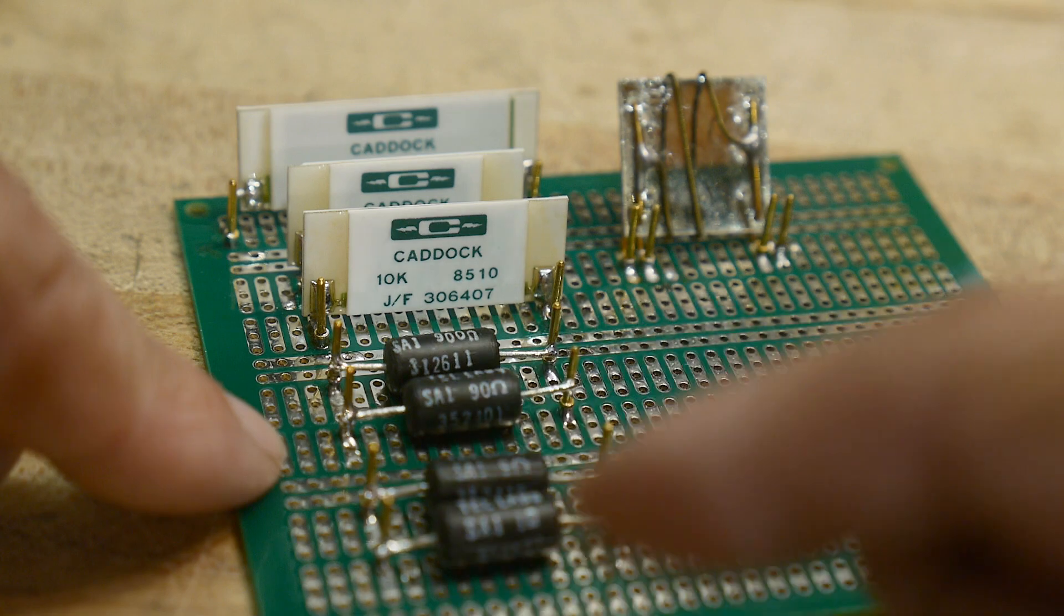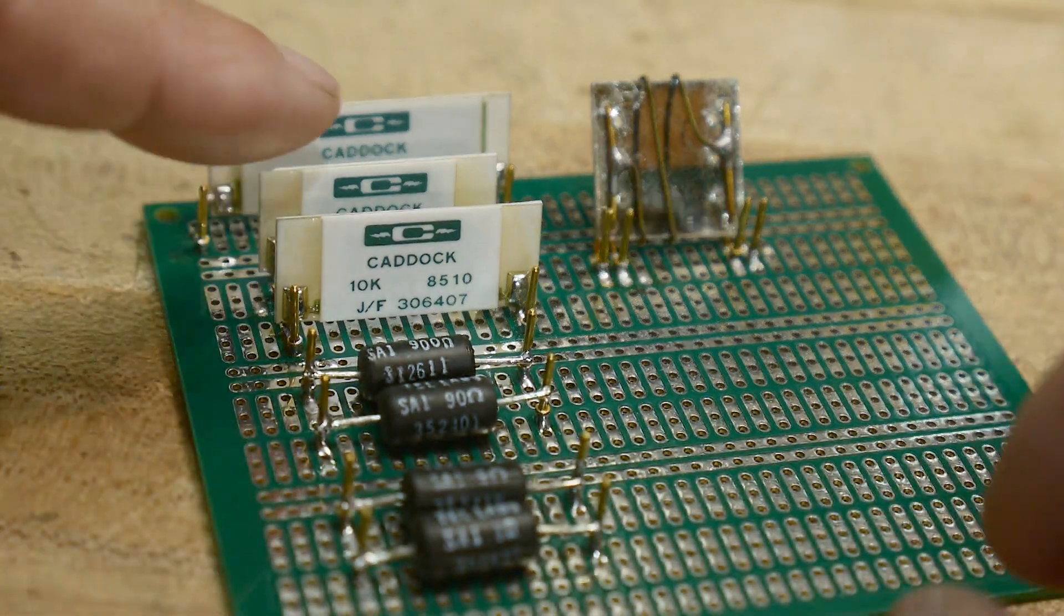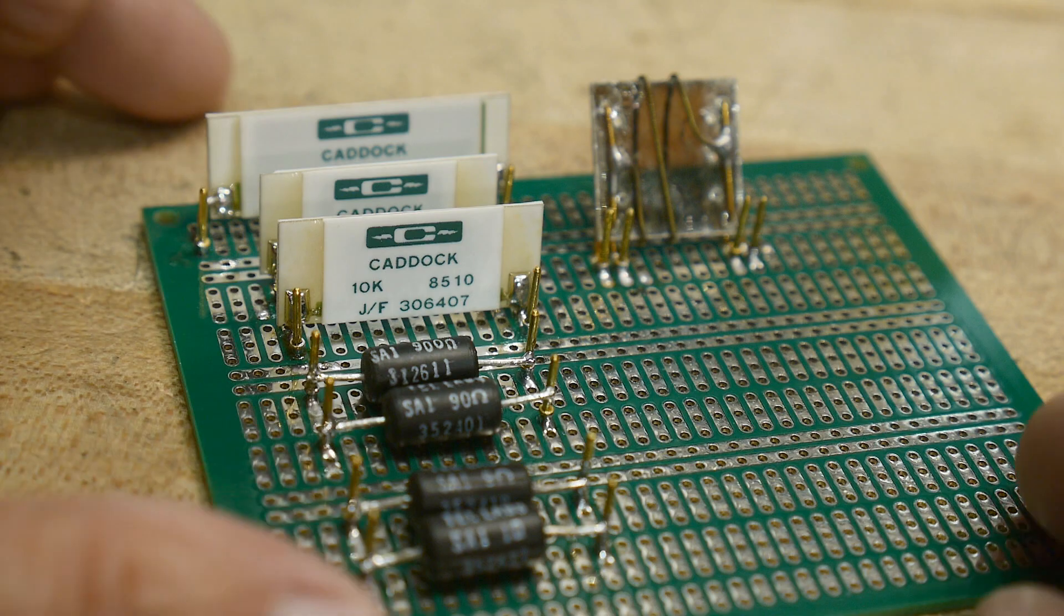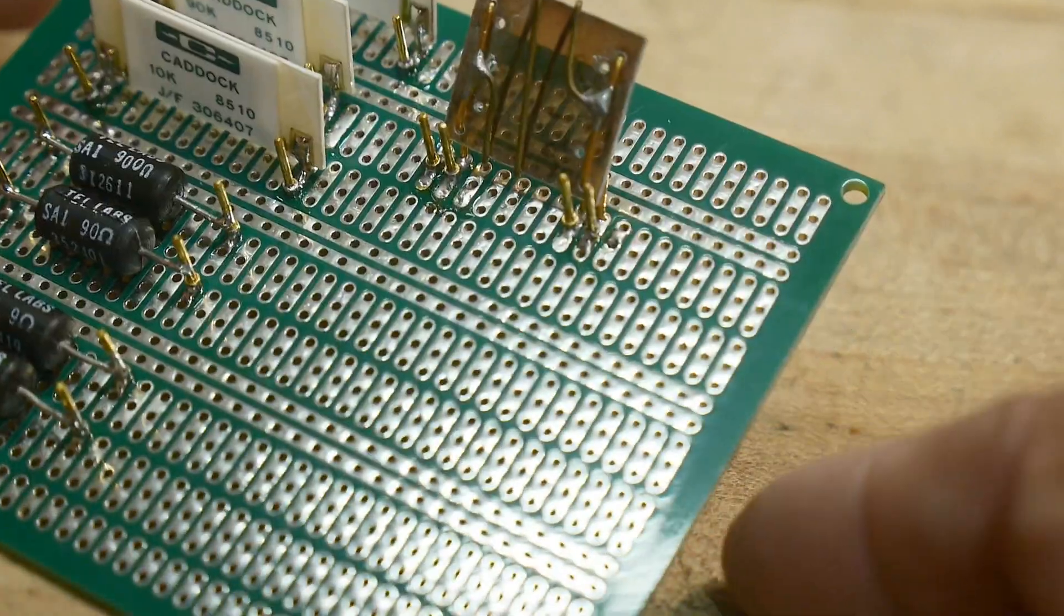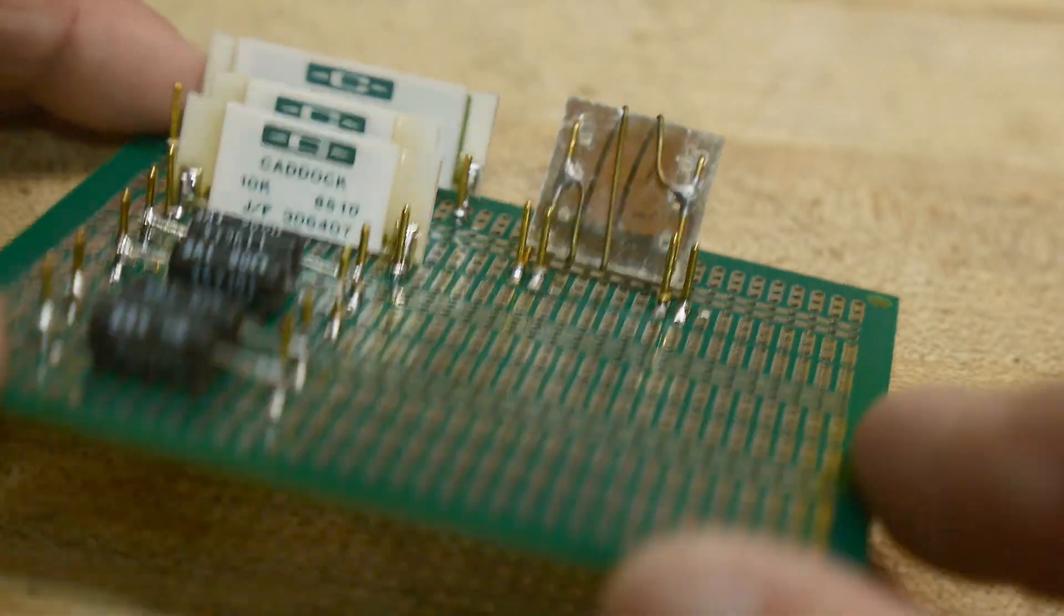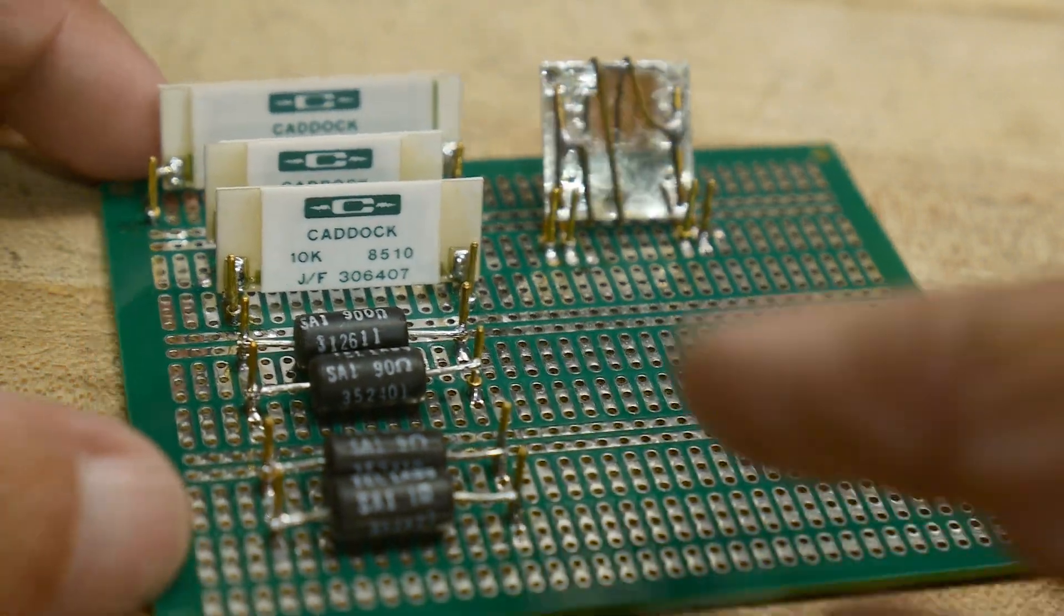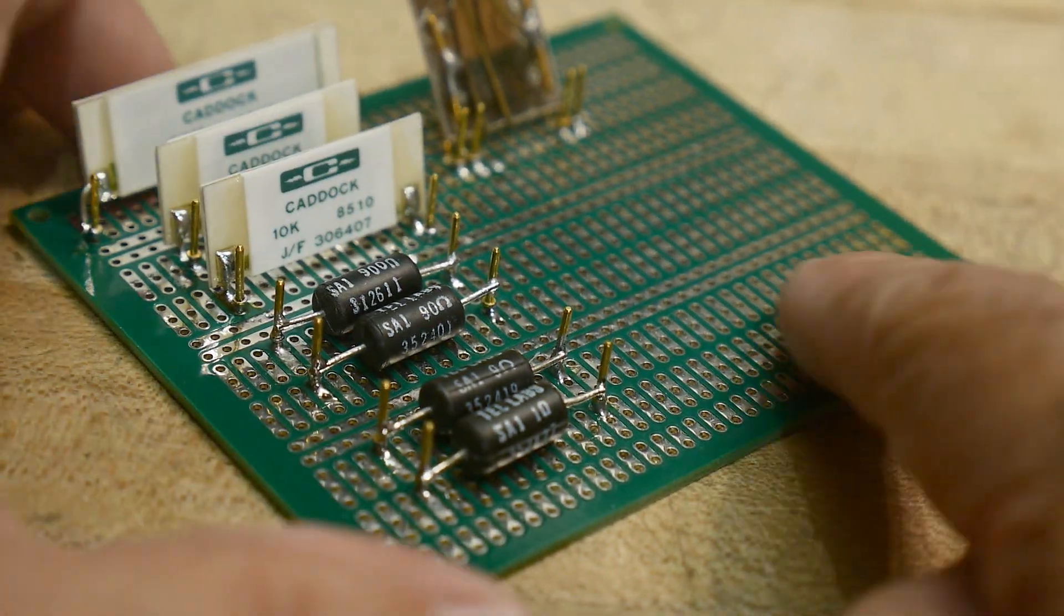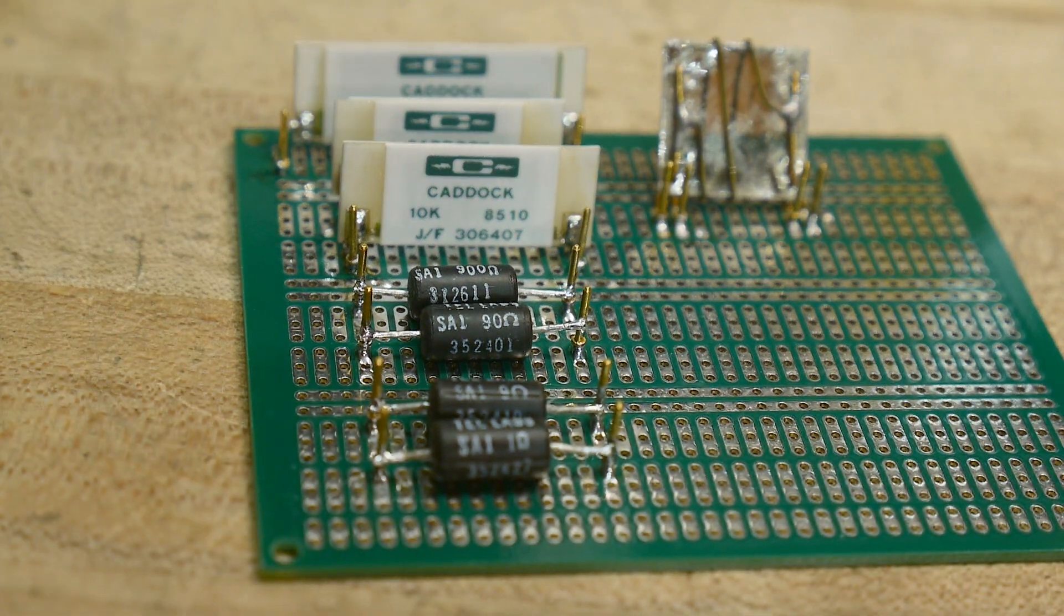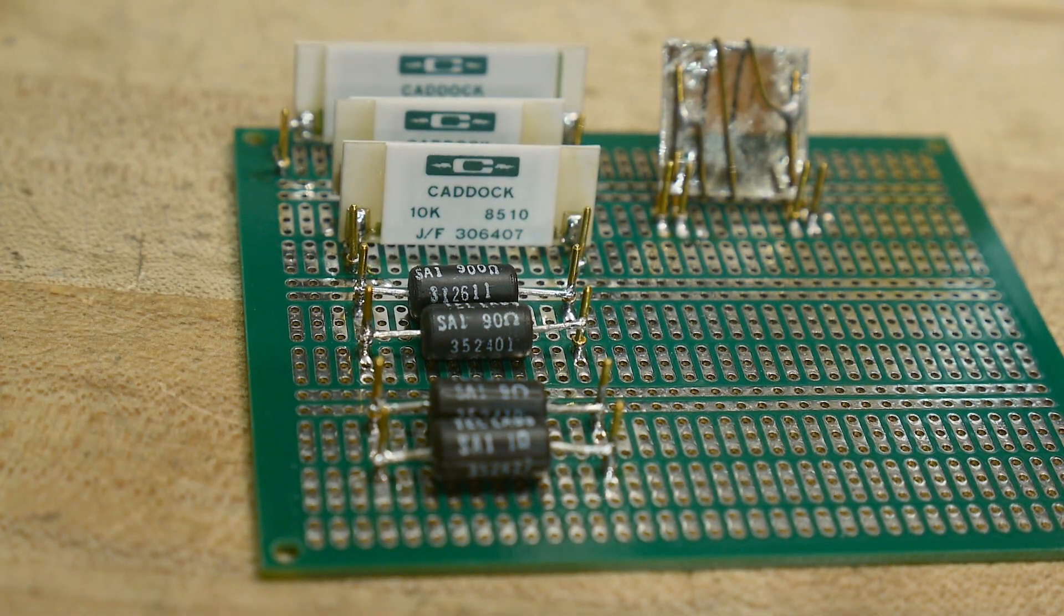Then these are some film resistors that are super accurate too, I think these are 0.1%. And then we got this one really odd resistor here that I decided to save. Let's measure these and see how good they are against my meter.